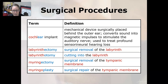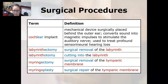Labyrinthectomy is the surgical removal of the labyrinth, and labyrinthotomy is cutting into the labyrinth. Myringectomy is the surgical removal of the tympanic membrane, and myringoplasty is the surgical repair of the tympanic membrane.